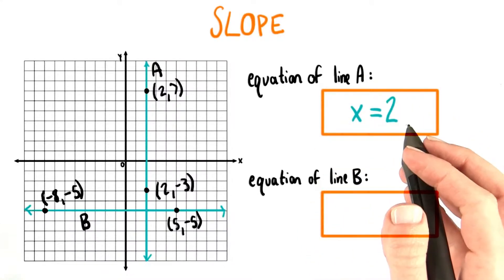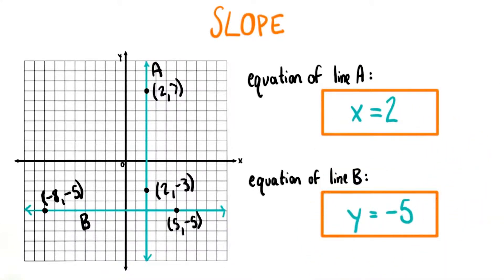The equation for line A is x equals 2, and the equation for line B is y equals negative 5.